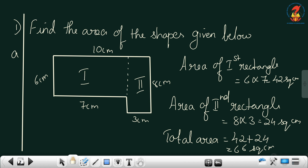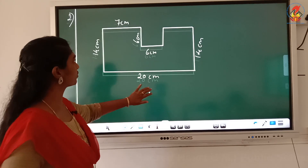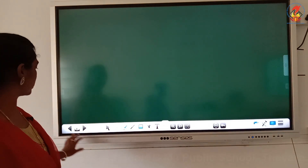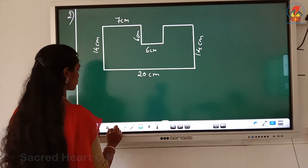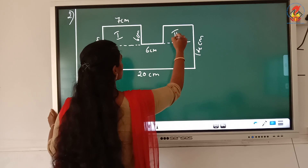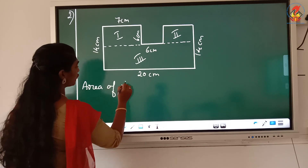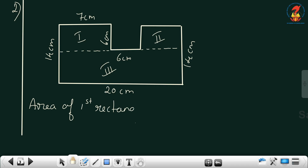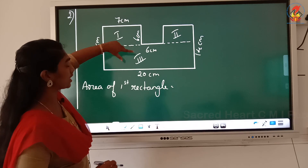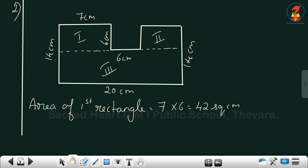So this is how you split and find out the area. I will show you another question here. We can split this in different ways. I am going to split it in this way — one rectangle here, one rectangle here, and this is the third one. So this is 1, this is 2, and this is the third rectangle. Area of the first rectangle: length is 7 and the breadth is 6, so 7 into 6 you get 42 square centimeter.